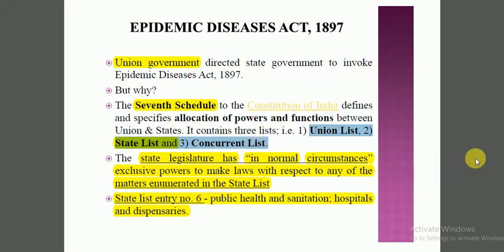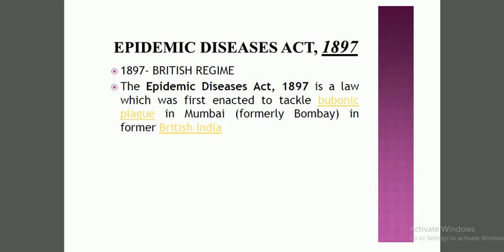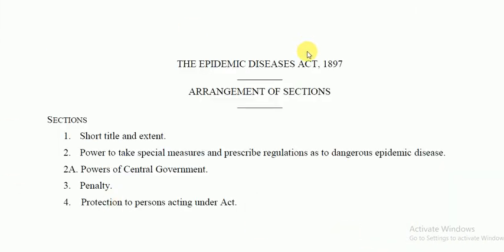So you have to remember Schedule 7 of the Constitution, the three lists — Union List, State List, and Concurrent List — and Entry Number 6 which covers public health and sanitation. Now, the year 1897 means this was during the British regime. This Act was enacted to tackle the bubonic plague that was prevalent at that time in Bombay. This is a very small act — there are only 4 sections — and the most important are Section 2 and Section 2A.